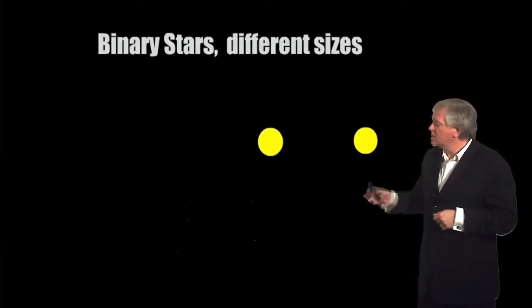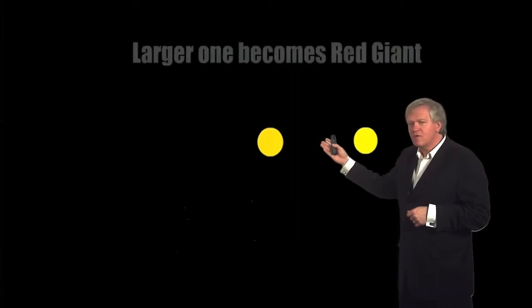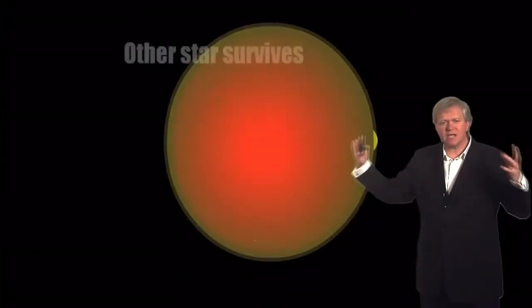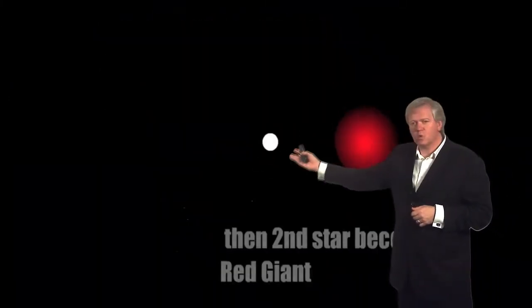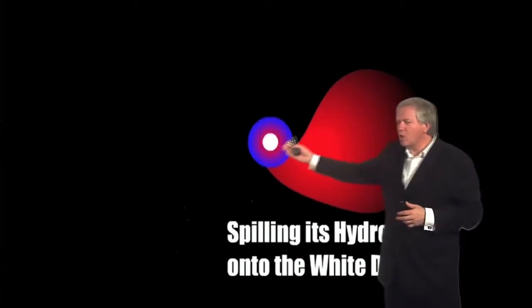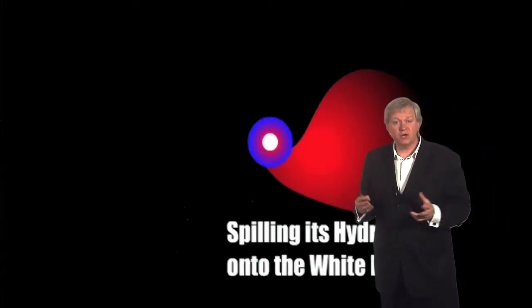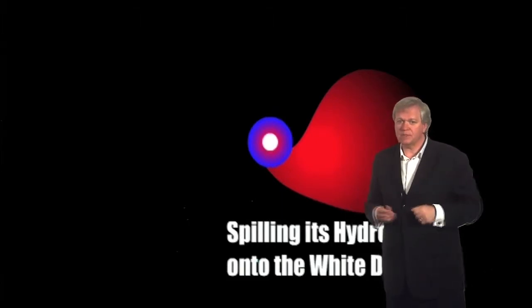But if our sun was instead formed in a binary star, that same process happens for the larger of the two stars. It collapses down, forms a white dwarf, and then the second star can go through that same process and make this white dwarf star become heavier and heavier. Now something amazing happens when it reaches 1.38 times the mass of the sun. It becomes unstable, it's a gravitational collapse. But instead of forming a black hole, it explodes as a giant thermonuclear bomb. These are type Ia supernovae.